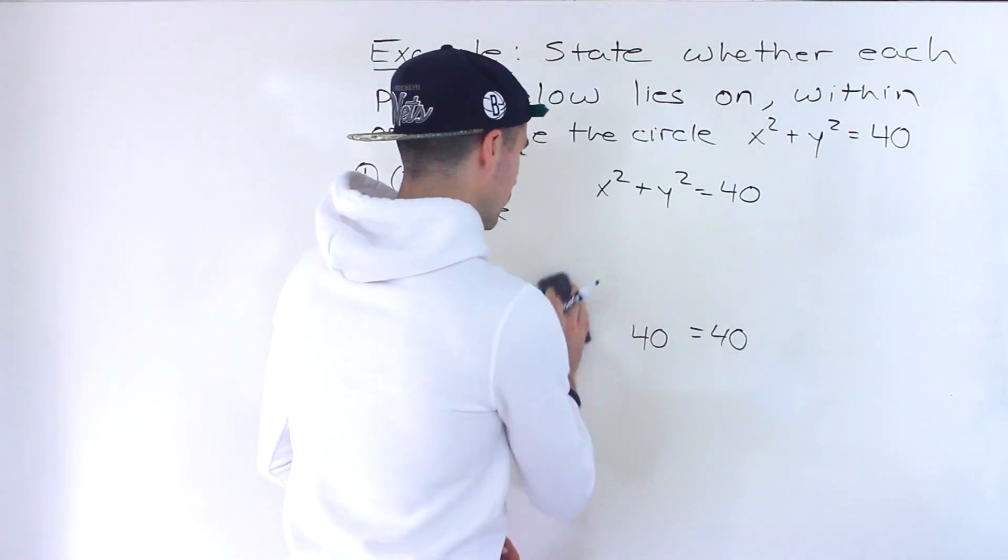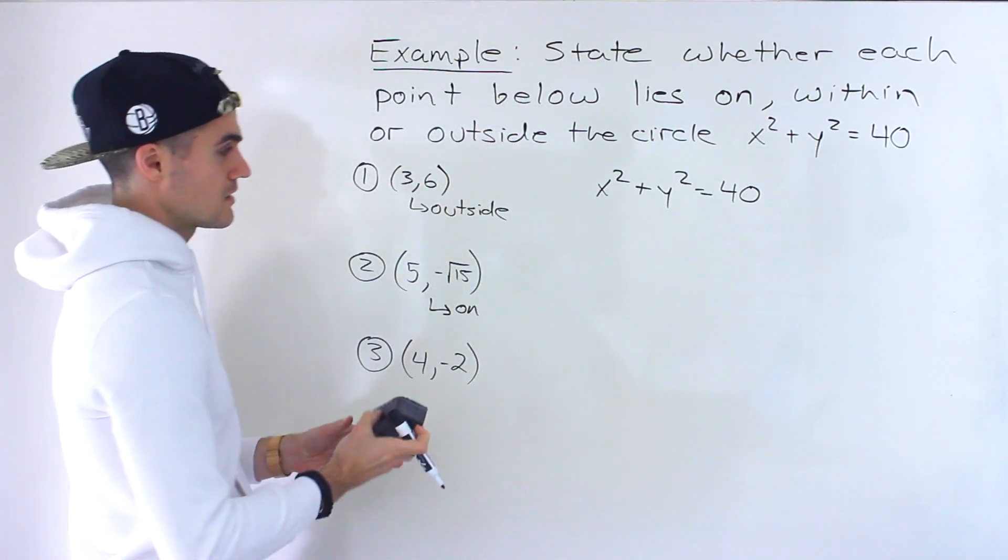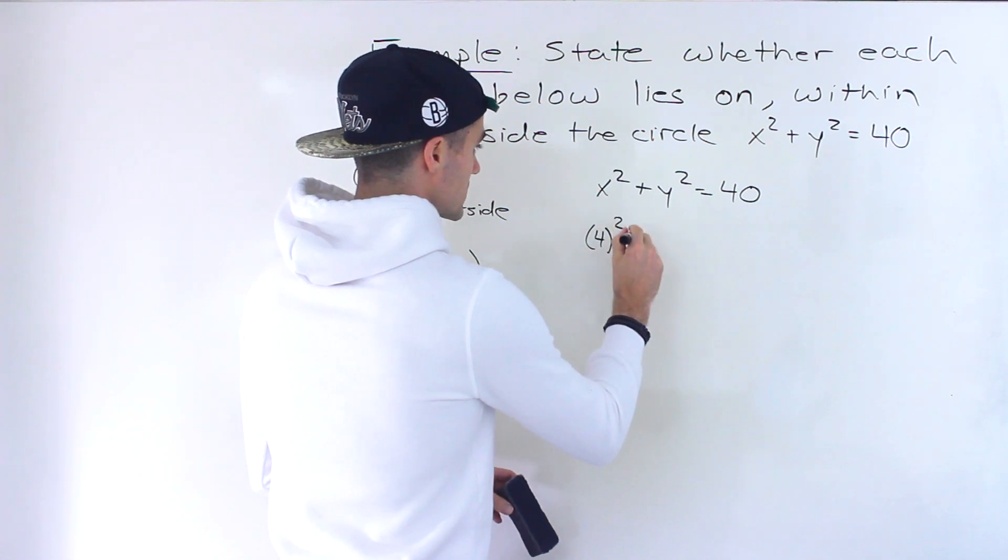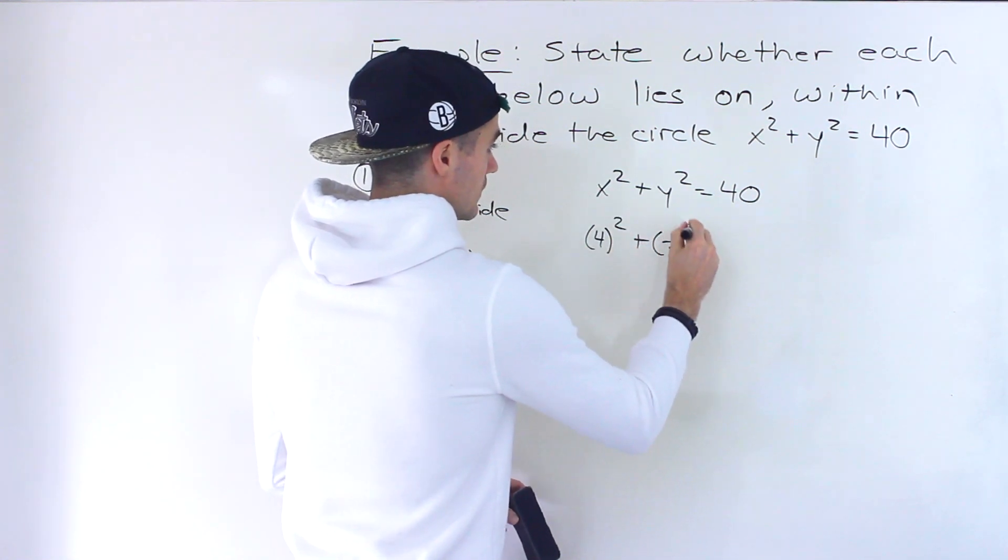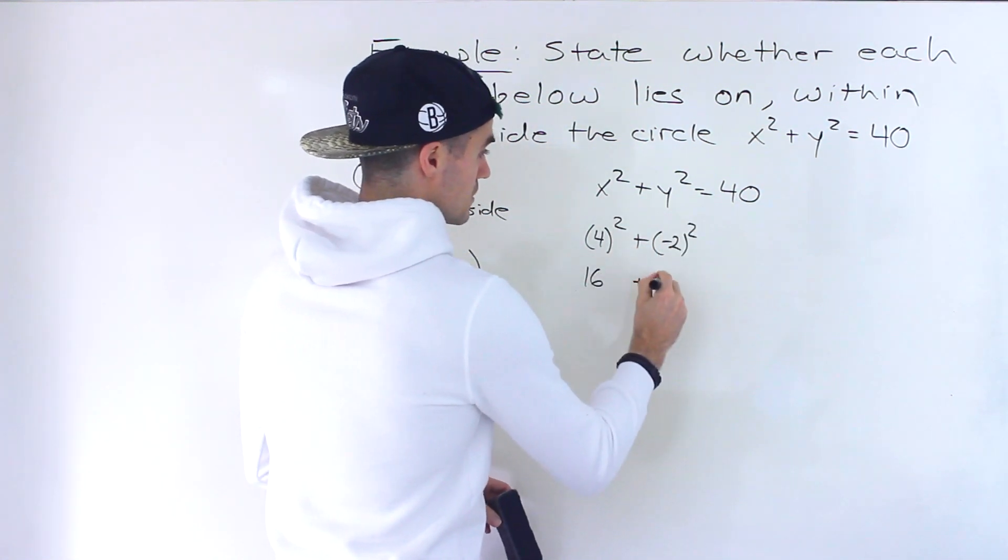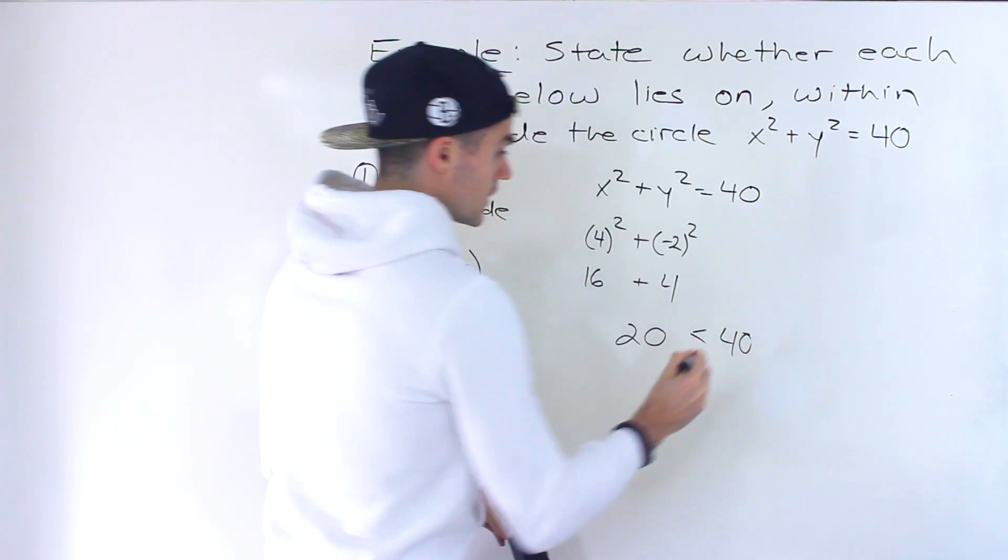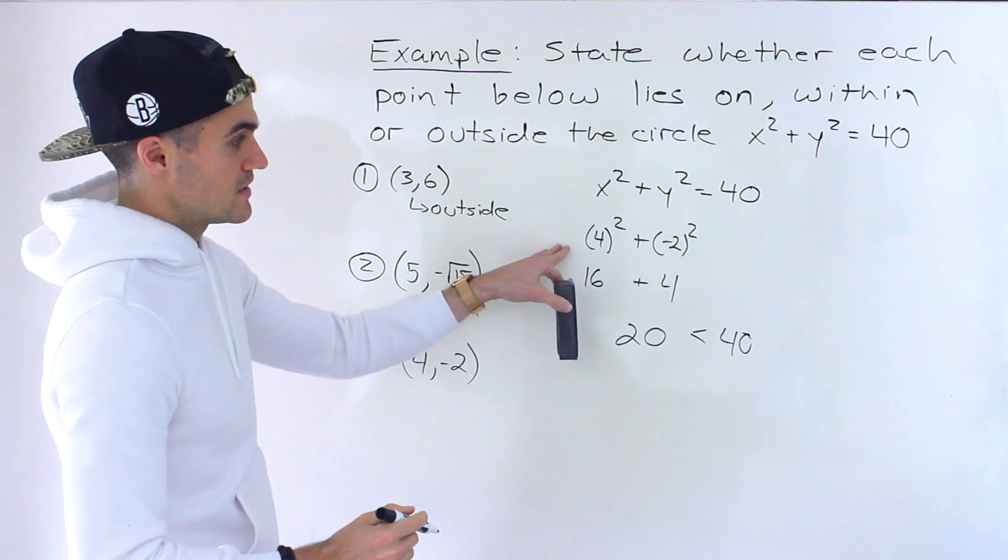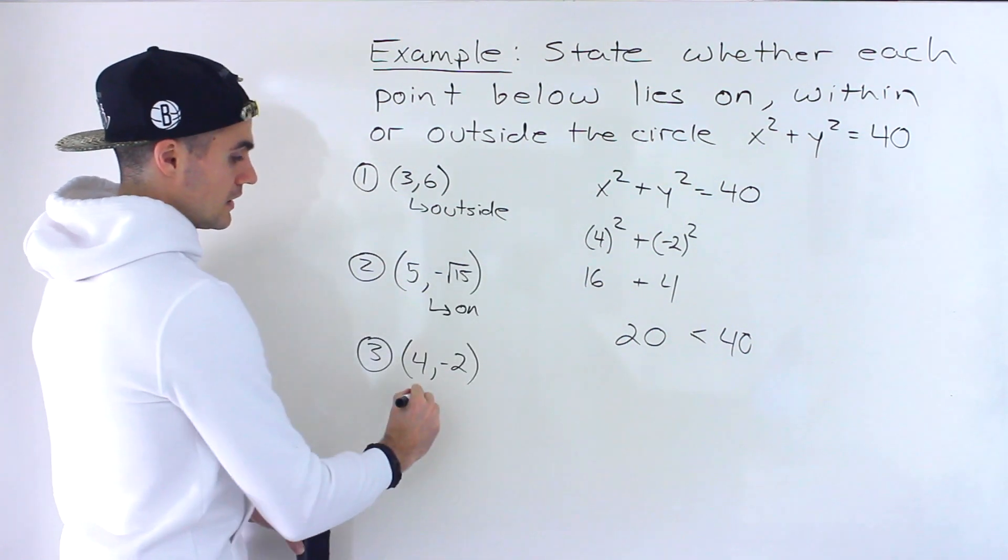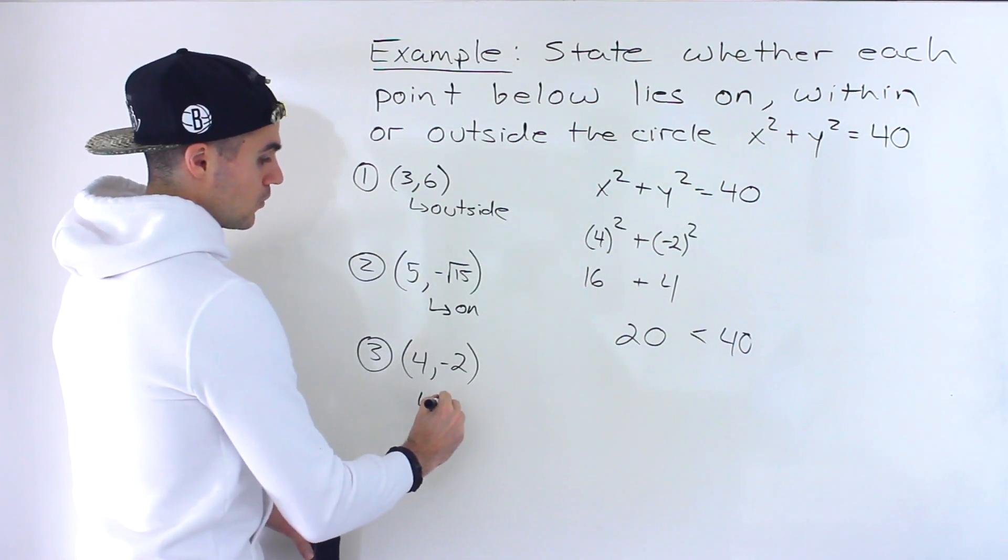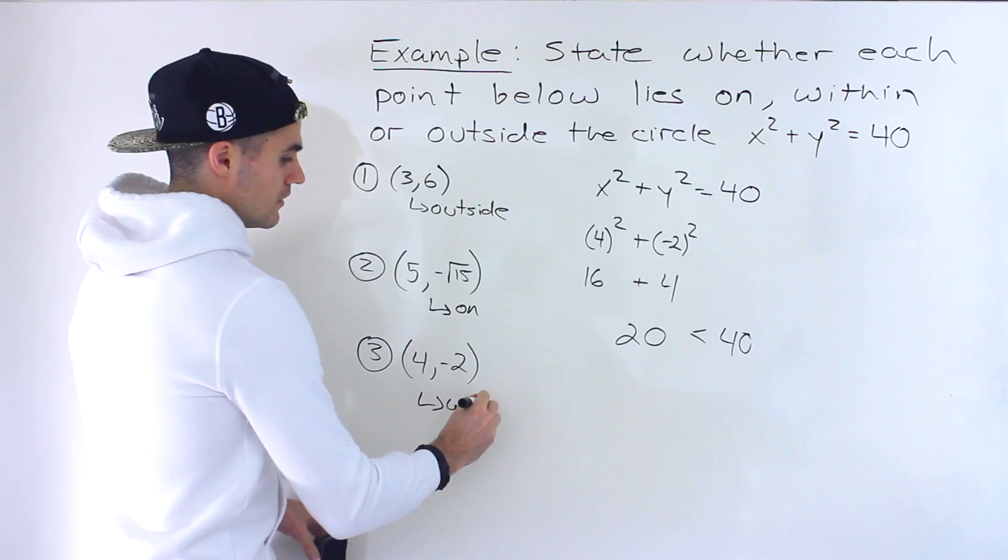And then finally for 4 and negative 2, you can kind of see what's going to happen. These numbers are fairly small so 20 is going to be less than 40, and so this point is going to lie within the circle.